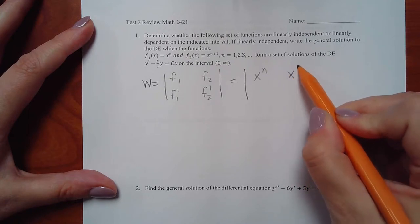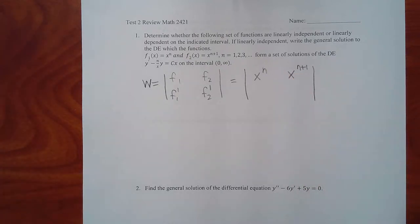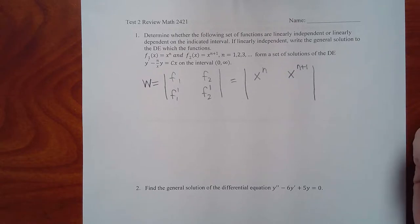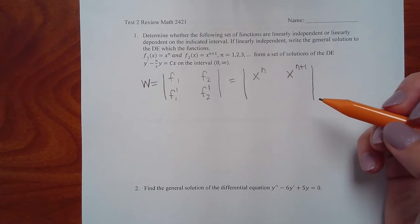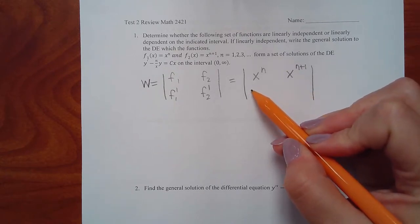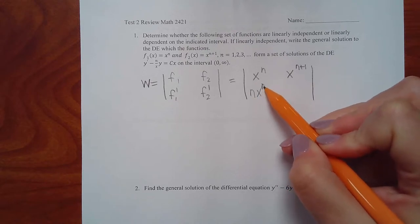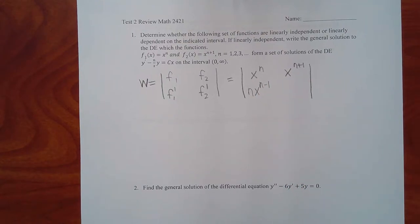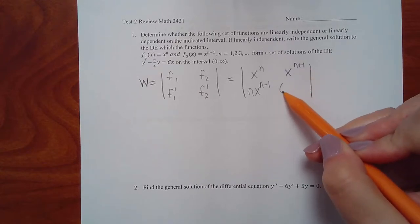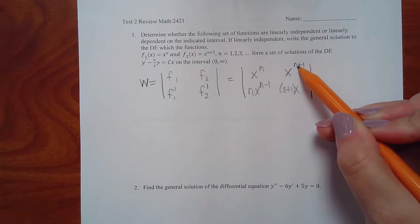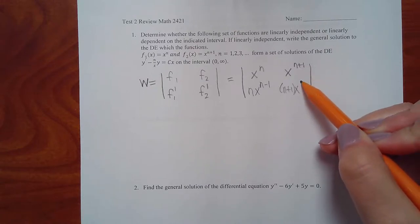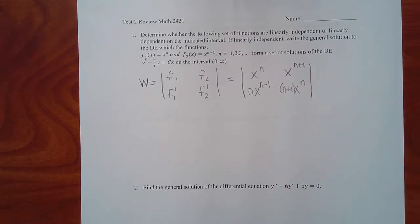f1 is x to the n, f2 is x to the n plus 1. Taking the derivative of f1 using the power rule — bring down the power and decrease it by one. Same for f2: bring down the power and decrease it by one. When you do n plus 1 minus 1, you just get n. Then to calculate the Wronskian, take the determinant.